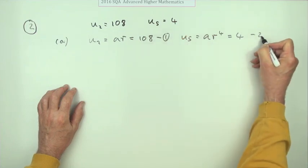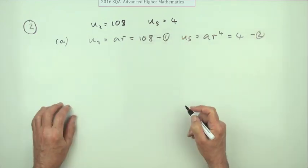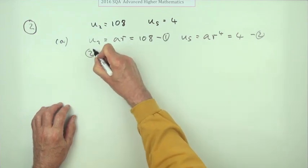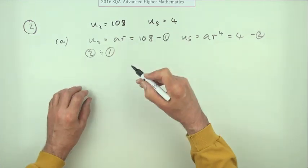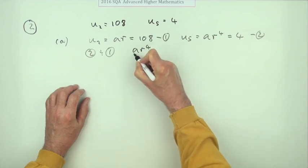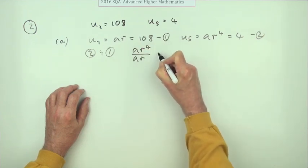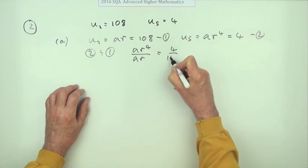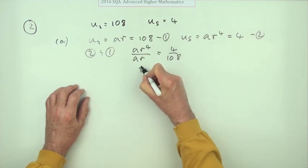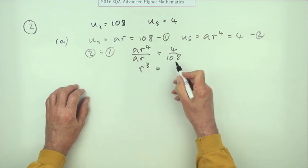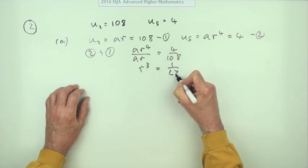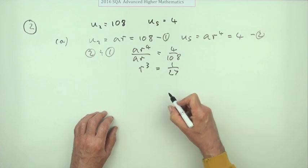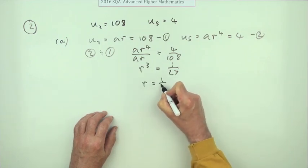A pair of simultaneous equations. Two equations and two variables. Divide them. If you do two divided by one, that'll knock out A. AR to the four over AR will be four over a hundred and eight. So that drops down to R cubed equals, and there's not a lot happens with that. Now we just go down to one over twenty seven, which is very handy for a cube, so that R equals a third.